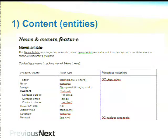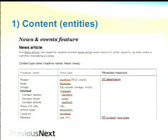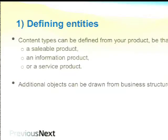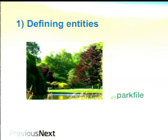The first element is content. How do you get your content structure? Drupal responds really nicely to content modelling. You can derive content from a content modelling exercise really easily - writing down the properties of your content, what fields you need. Some content may already exist in your project or emerge from user requirements. Sometimes content structure exists prior to user requirements and vice versa. Content types can also be defined from your product - a saleable product, an information product, a service product. In the case of Parkfile, we have one type of content: a park.